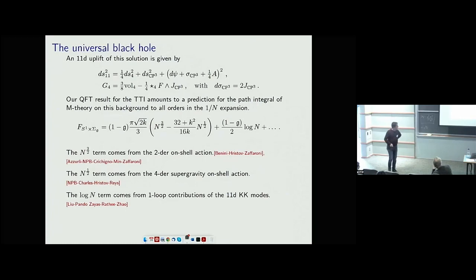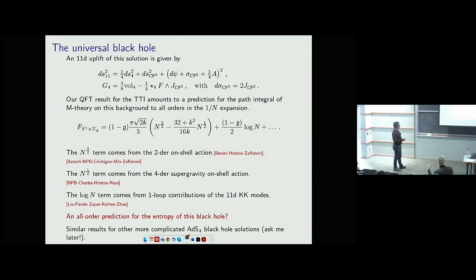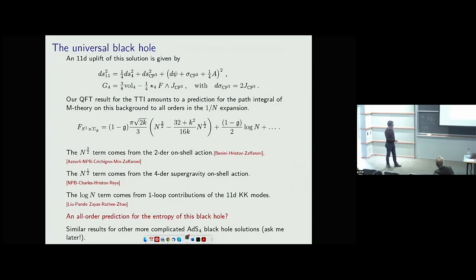This is only the tip of the iceberg, because we also have similar results for many other AdS4 black holes with scalar fields and vector multiplets. The important point is that this index, computed to all orders in N, should give you an all-order completion of the series in the bulk — completing the dot-dot-dot. At the moment I don't have a good idea how to compute or check that in M-theory or 11D supergravity.